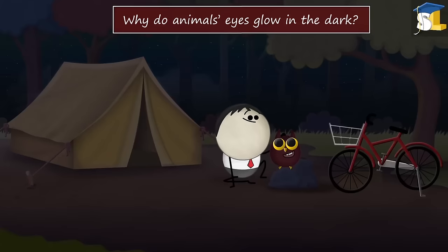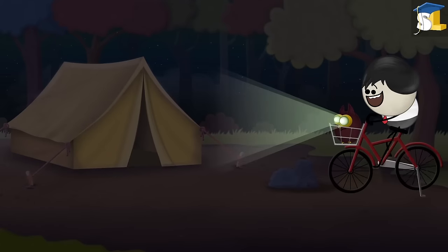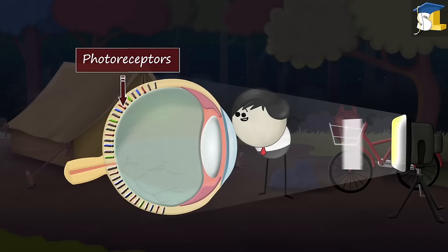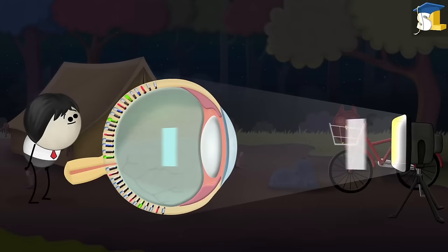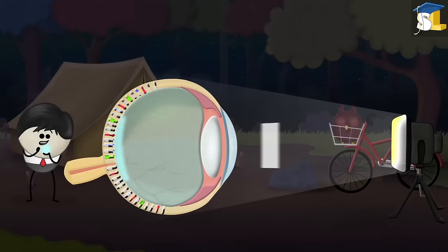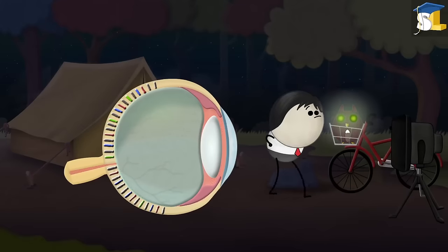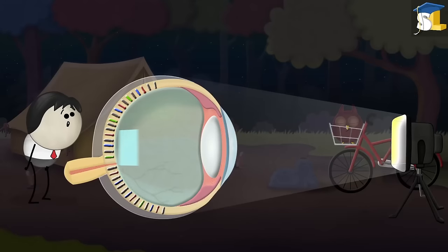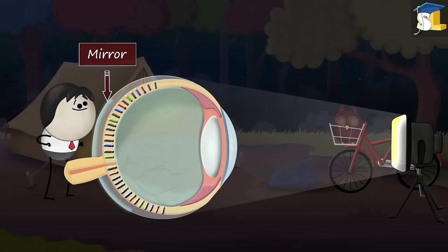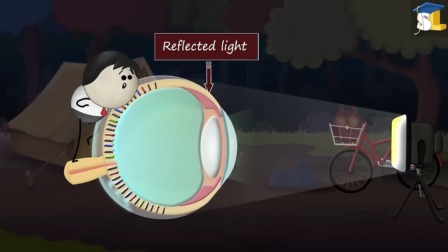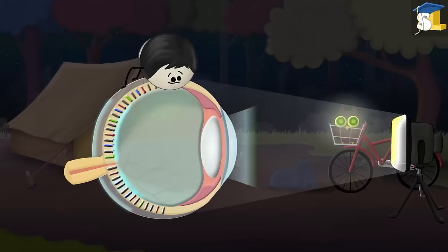Why do animals' eyes glow in the dark? Our eyes have a layer called the retina which is made up of photoreceptors. When light enters our eyes, it hits the photoreceptors, which detect light, making it possible to see. However, light which doesn't hit the photoreceptors remains undetected. Nocturnal animals like owls need to see better during the night, so their eyes have another layer below the retina called tapetum lucidum. When light doesn't hit the photoreceptors, it reaches the tapetum lucidum, which acts like a mirror and reflects light back onto the photoreceptors, giving them a second chance to detect light. Some of this reflected light also comes out of the animal's eyes, making it seem that its eyes are glowing.